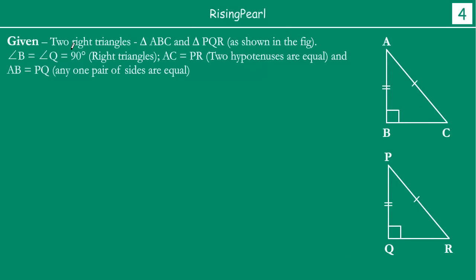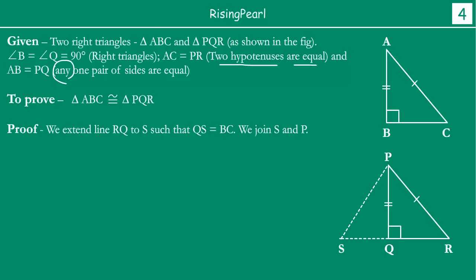Two right triangles ABC and PQR are as shown in the figure. Given: angle B equals angle Q equals 90 degrees; AC equals PR (the two hypotenuses are equal); and AB equals PQ (any one pair of sides are equal). We have to prove that triangle ABC is congruent to triangle PQR. For construction, we extend line RQ to a point S such that QS equals BC. Then we join S and P.